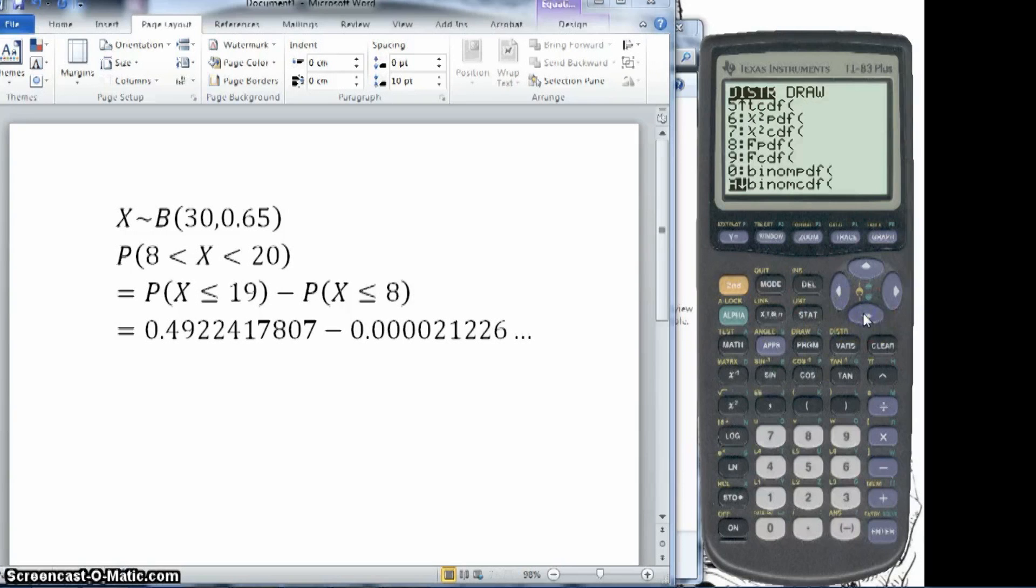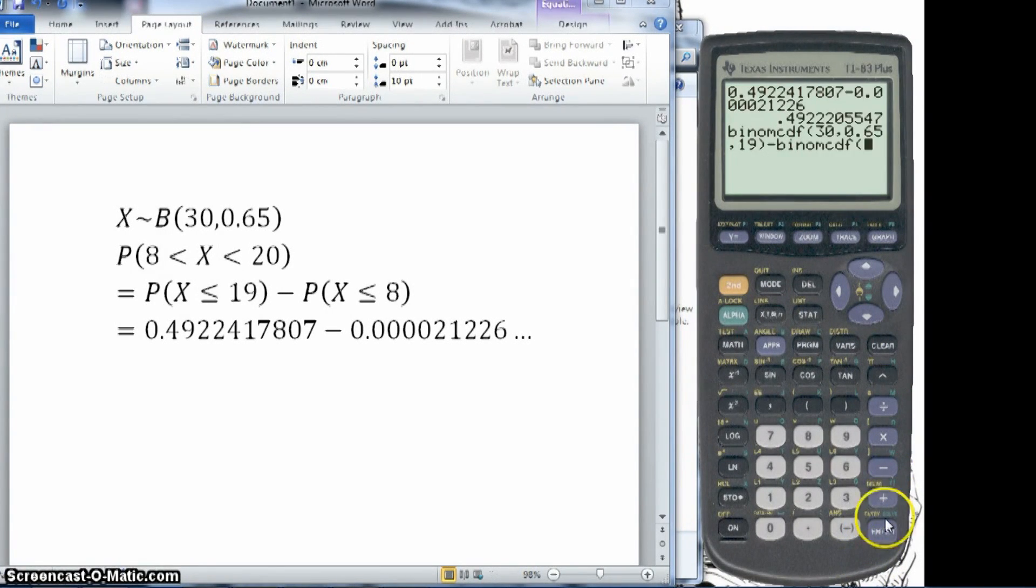30, 0.65, 8. Close the bracket. Press enter. And there's our answer. So you can do it in one go, in one sum on the calculator. Thank you.